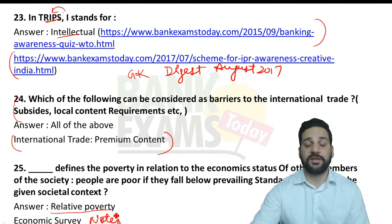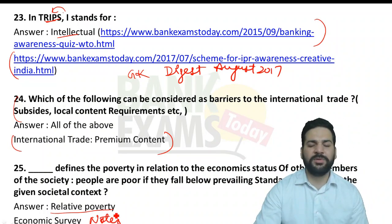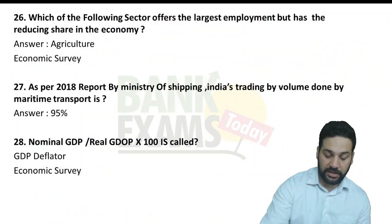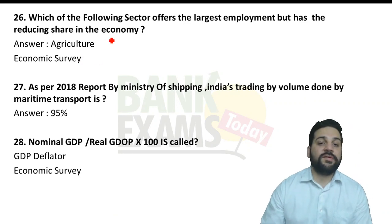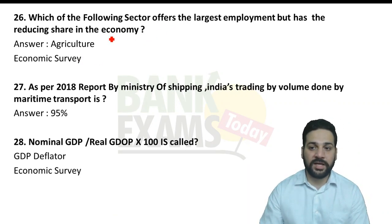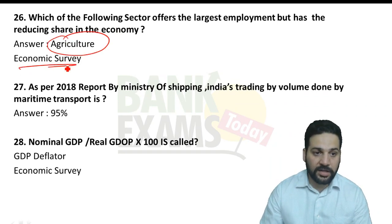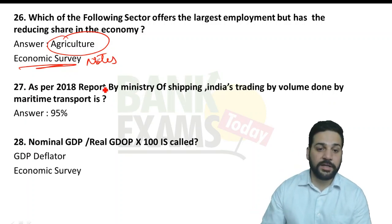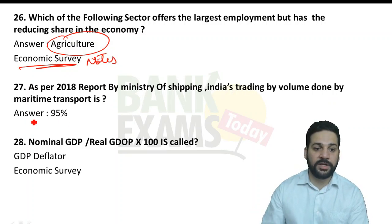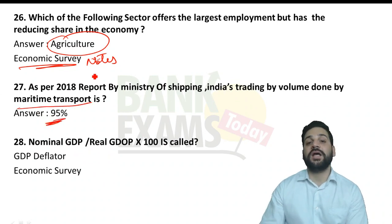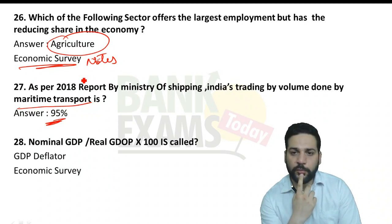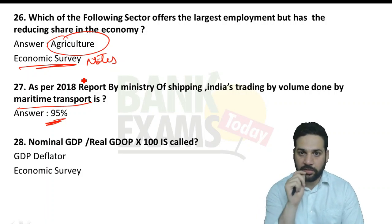If you are preparing for RBI Grade B or any related exam like Bank of India Grade Officer or Economic Service, the economic survey notes are very important. Which sector offers the largest employment but has a reducing share in the economy? Agriculture — again from economic survey notes. As per the 2018 Ministry of Shipping report, India's trading volume done by maritime transport is 95% — covered in our import-export policy lecture.